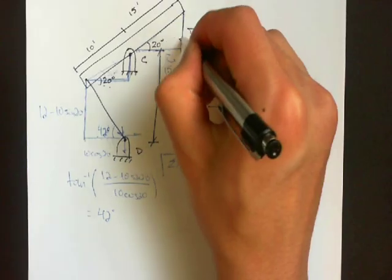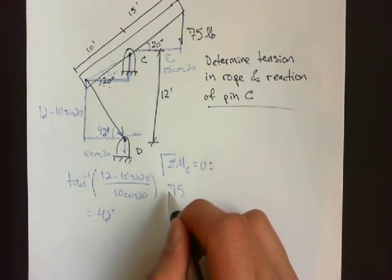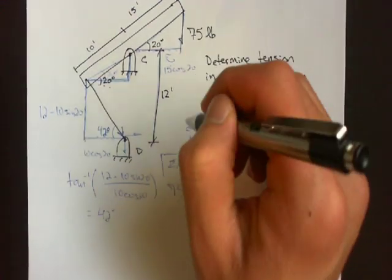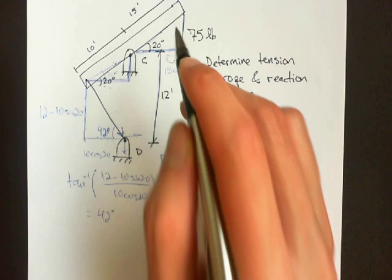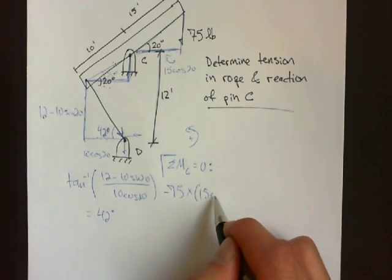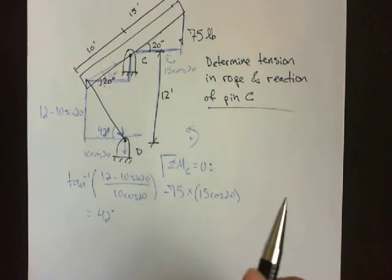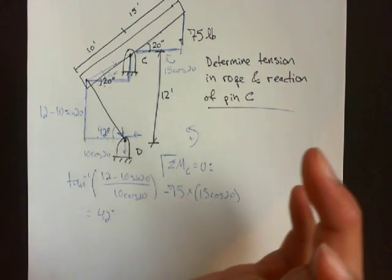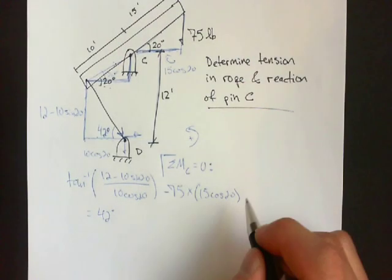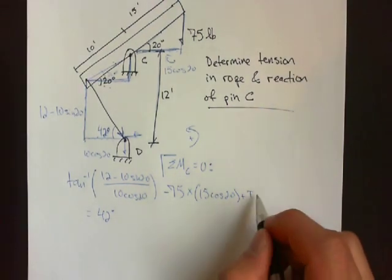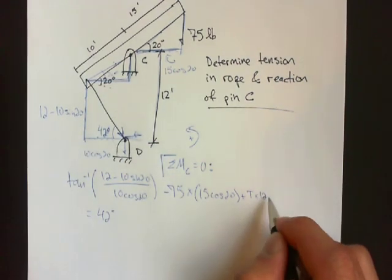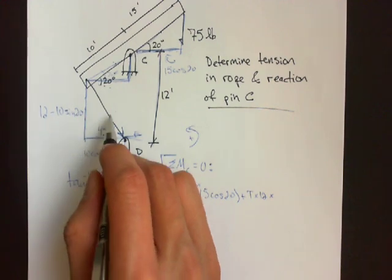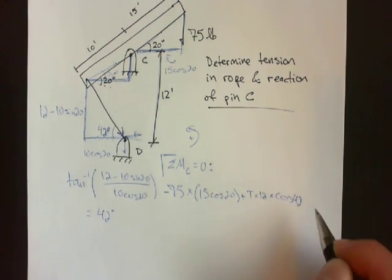So start off, we have this force 75 pounds. And this is our positive moment. It's 75 pounds, it's negative because it's going clockwise times the moment arm, which is this distance, which we found to be 15 cosine 20. And we have this force, it's clockwise, excuse me, it's counterclockwise, so it's positive plus tension times the distance is 12 times the component, which is adjacent over hypotenuse, so times cosine 42 equals 0.